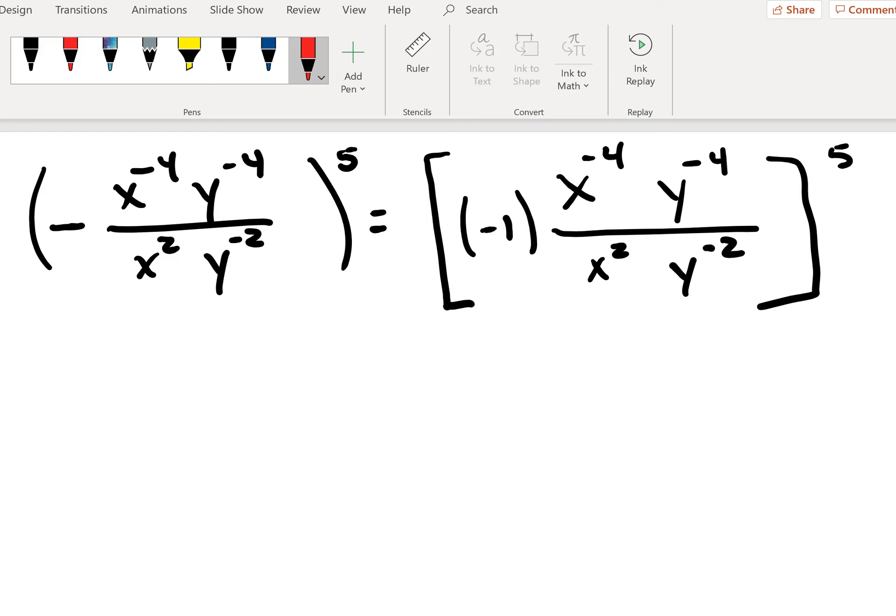And so that's the first method that we're going to utilize is getting rid of the negative exponents first. We're going to utilize our order of operations and work inside these big brackets first and get rid of as many negative exponents as we possibly can.